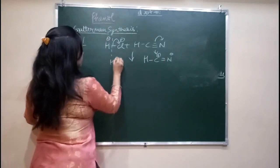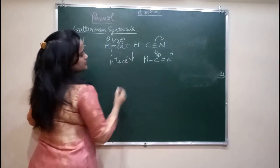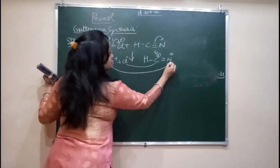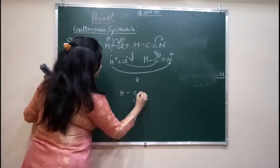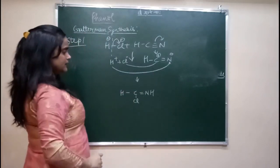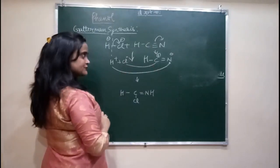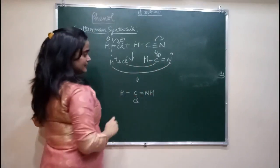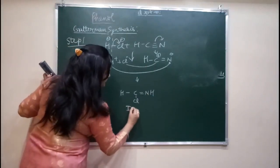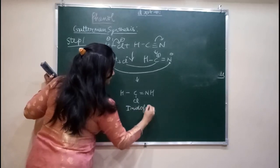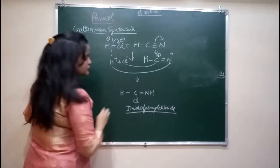Negative will attach with positive and positive will attach with negative. Cl has negative charge so it will attach with the carbon atom which has positive charge, and H will attach with N because H has positive and N has negative charge. The compound formed is called iminoformyl chloride. This mechanism is a kind of formylation. This is step one.